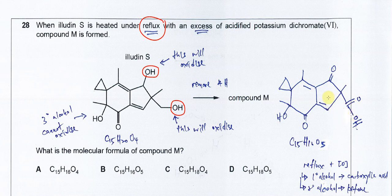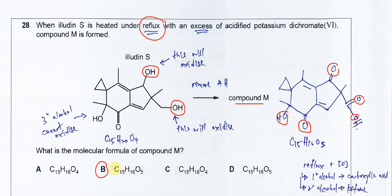Therefore, the molecular formula after the reaction — the molecular formula of M — if you count the carbon, hydrogen, and oxygen numbers, you get answer B. If you thought it was the aldehyde form, it would be A. But because it's refluxed with this oxidizing agent, another oxygen is added, giving COOH — a total of 5 oxygens. So the answer is B. Thank you.